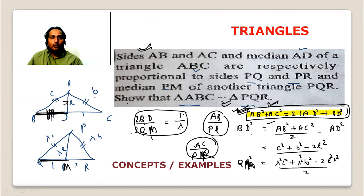So now 2BD divided by 2QM - and QM is half of QR because it is a median. So if we can apply Apollonius' theorem, then we can do it easily. And this will help us.